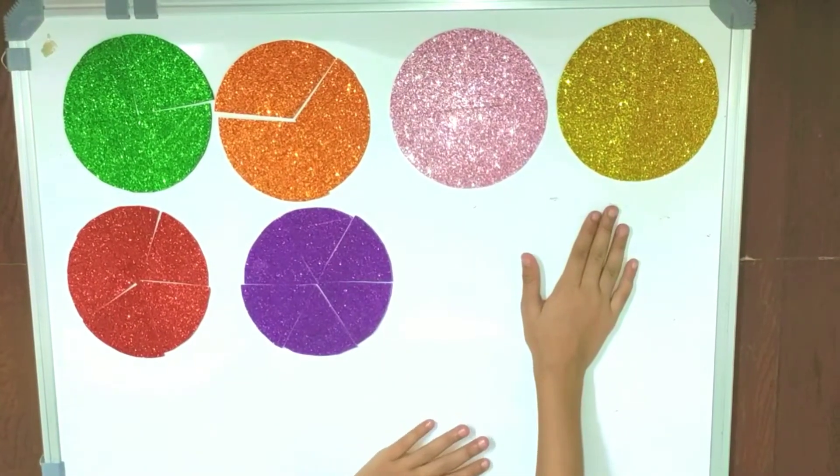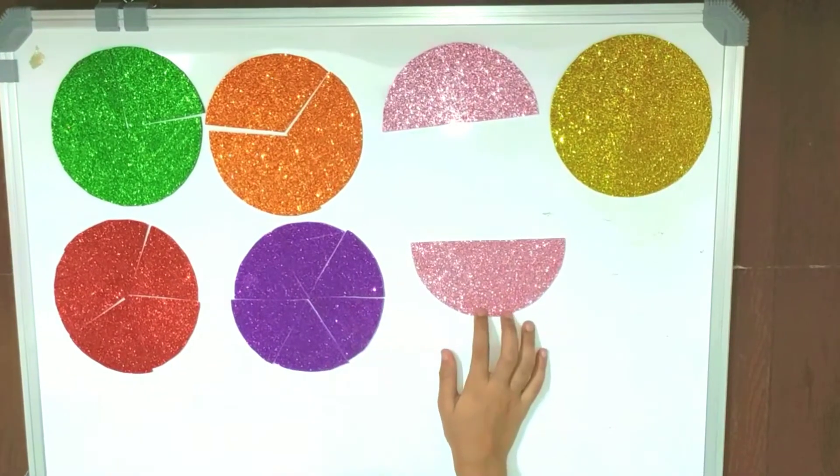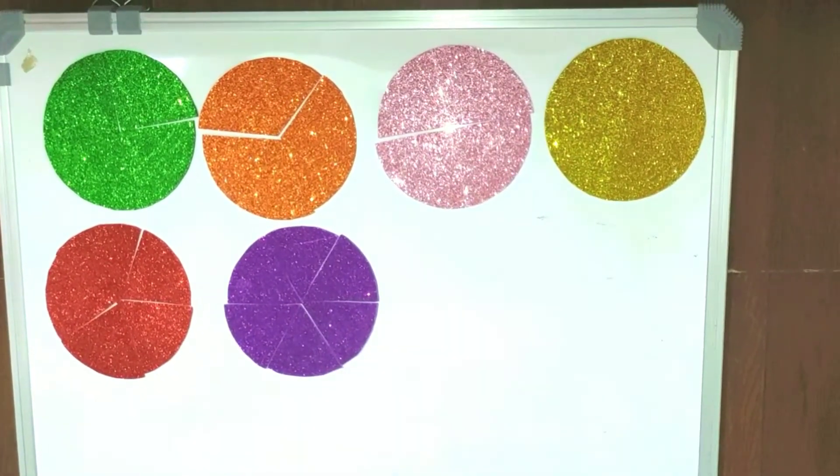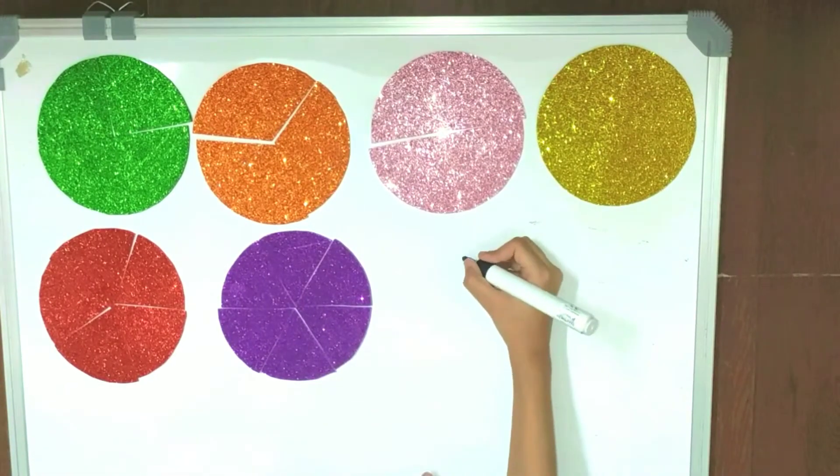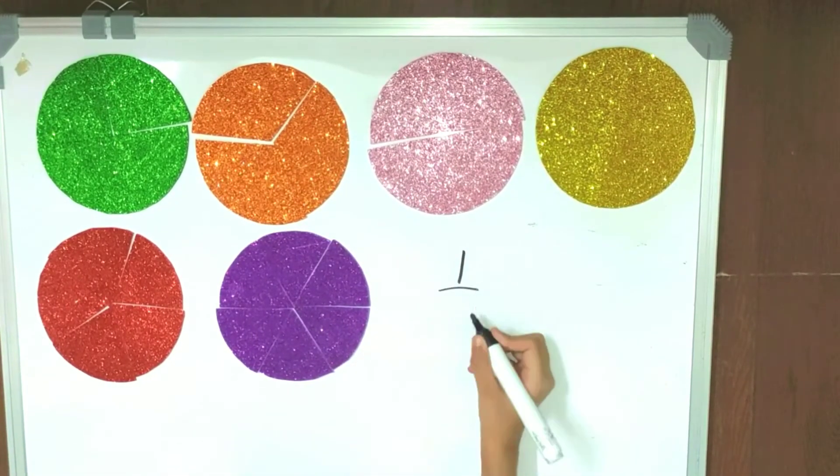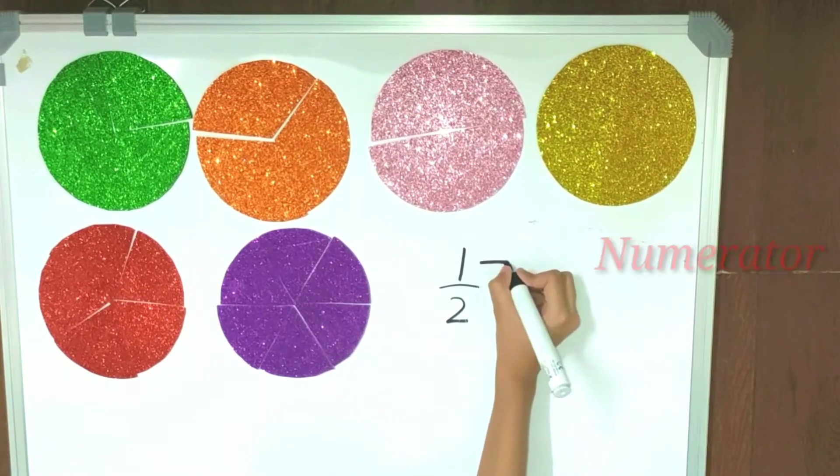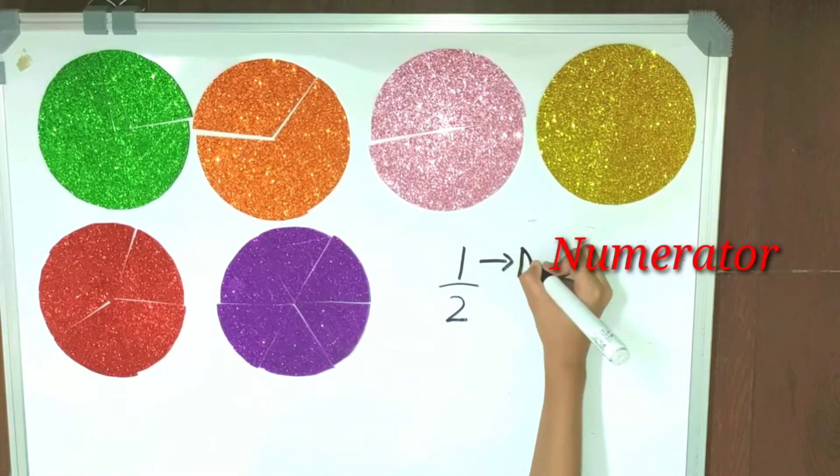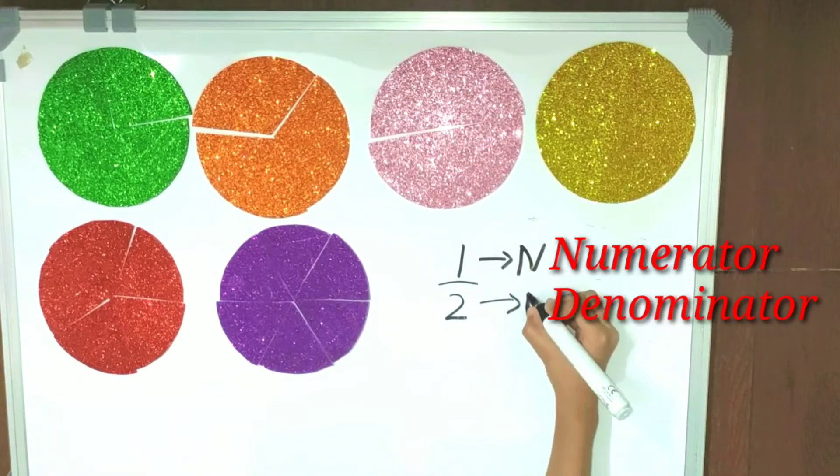If we divide this whole into two equal parts and take one from it, we will call it one out of two and we will write it one by two. The number which is on the top is called numerator and the number which is on the bottom is called denominator.